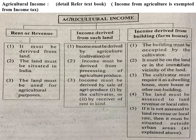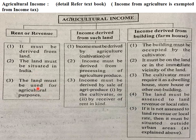Agricultural Income: in very simple terms, the income received from agricultural activities or cultivation is known as agricultural income. Agricultural income is exempted from income tax. The concept of agricultural income is divided into three parts. First: rent or revenue — the rent or revenue must be derived from land situated in India and used for agricultural purposes. That is termed as agricultural income.